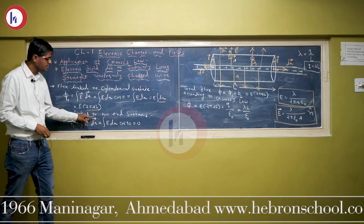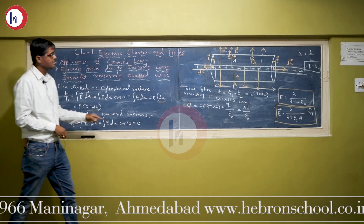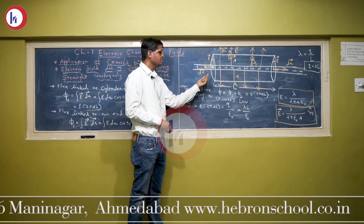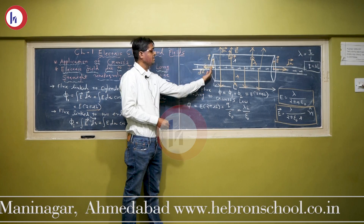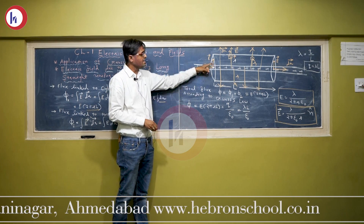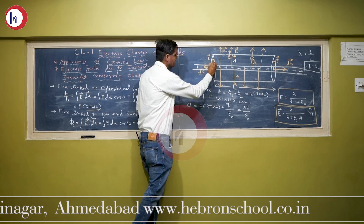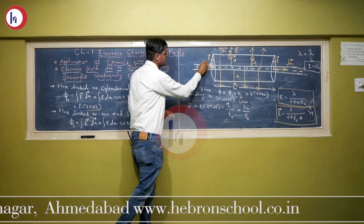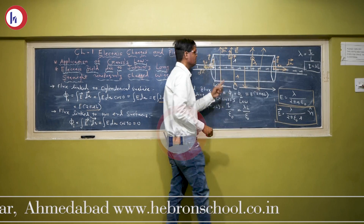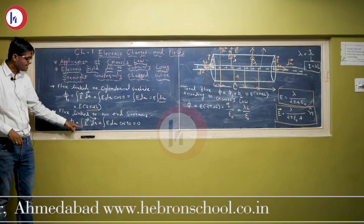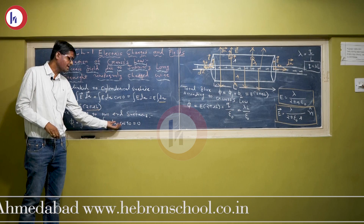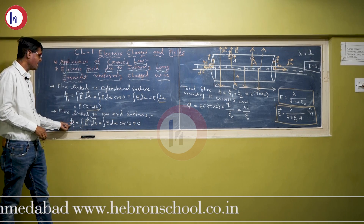For the flux linked to the two end surfaces of the cylinder: the electric field is radially outward, while the area element of each end cap is normal to that surface — so the angle between the electric field and the area element is 90°. Therefore φ₂ = E dA cos90° = 0. So φ₂ equals zero.